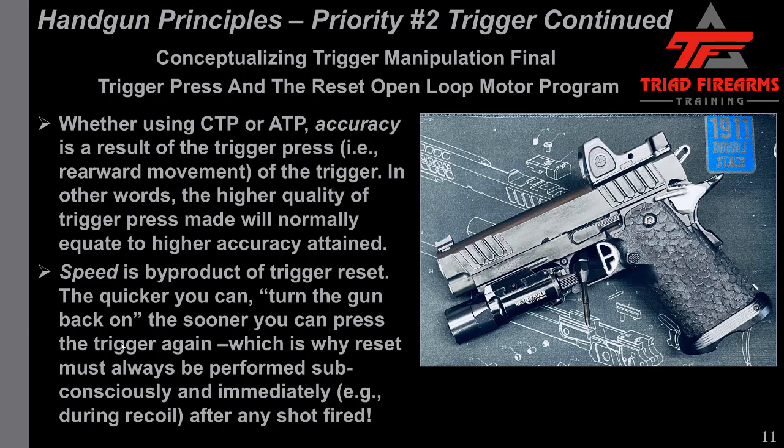Whether using controlled or accelerated trigger press, accuracy is a result of the trigger press — the rearward movement of the trigger. The higher quality of trigger press made will normally equate to higher accuracy attained. Speed, however, is a byproduct of trigger reset. The quicker you can turn the gun back on, the sooner you can press the trigger again, which is why reset must always be performed subconsciously and immediately — during recoil, after any shot fired, whether accelerated or controlled.